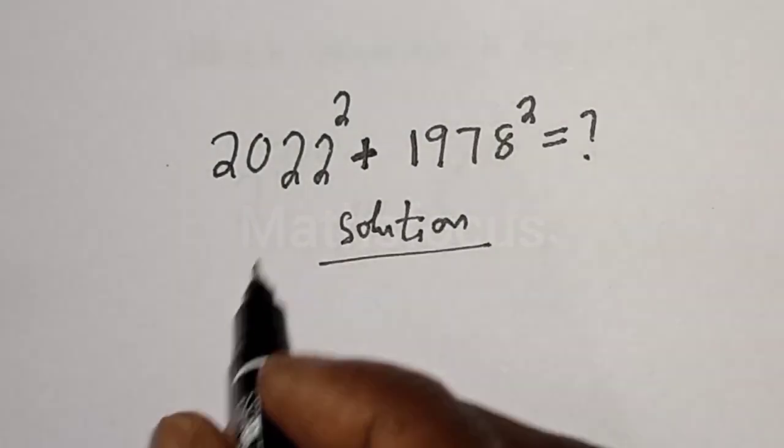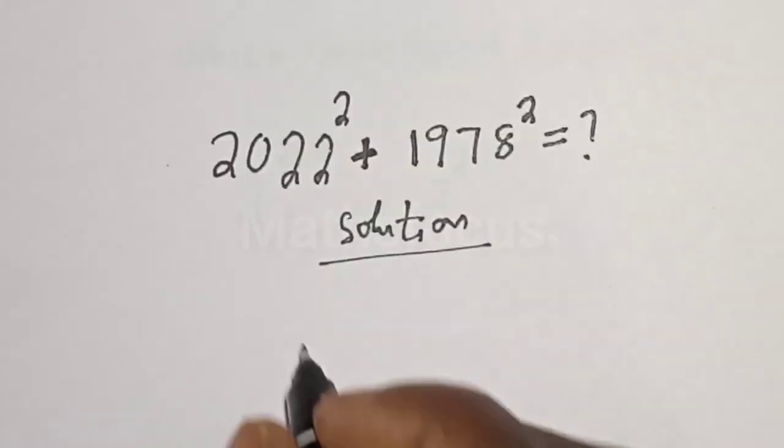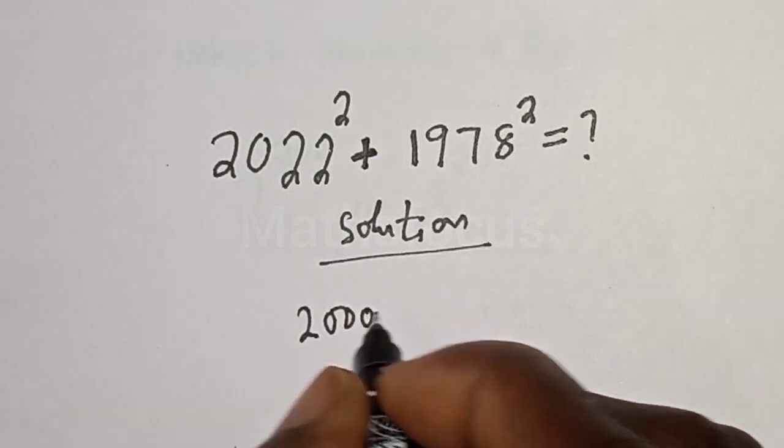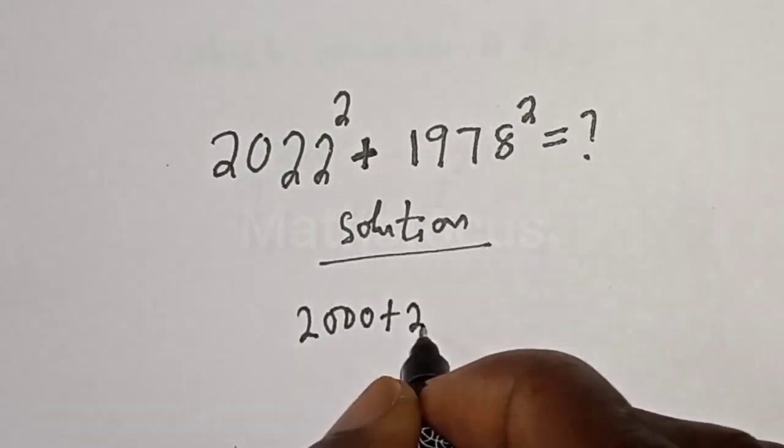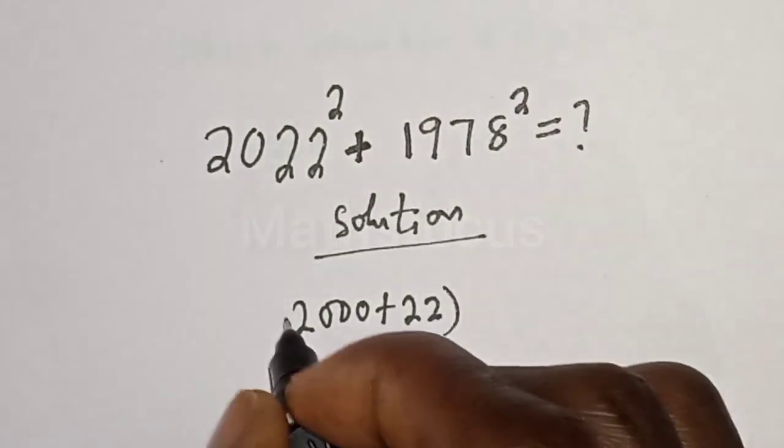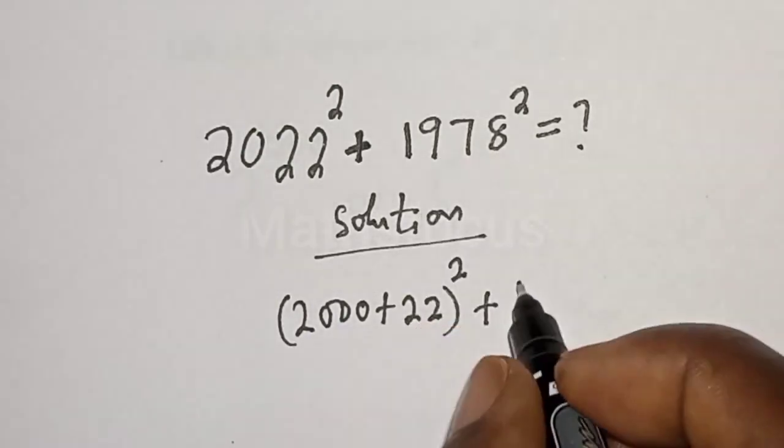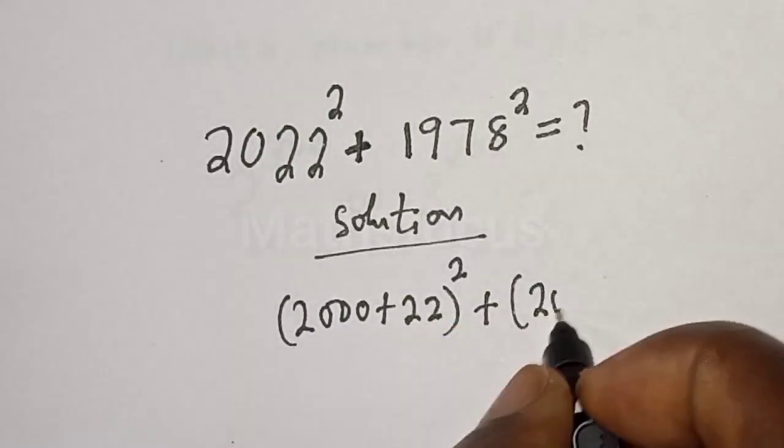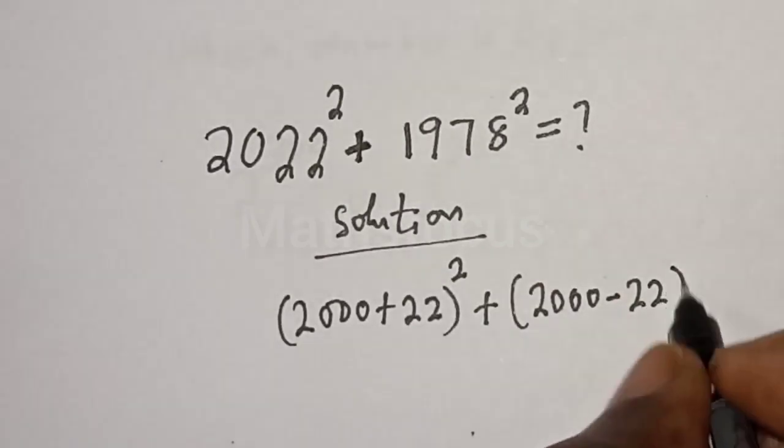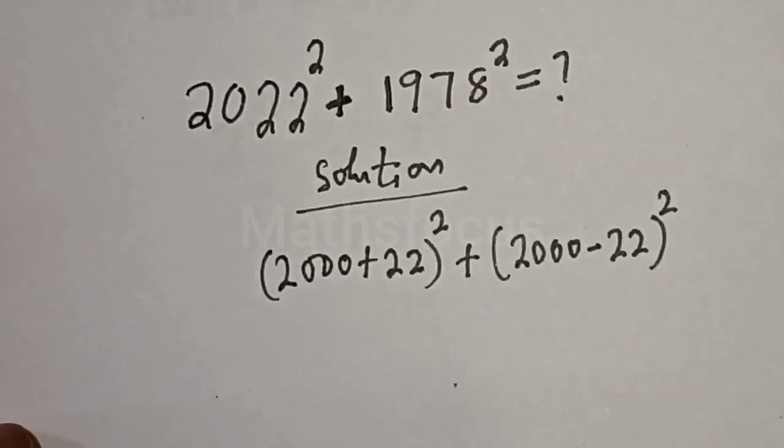Let's see, 2022 can be written as 2000 plus 22, then squared. Plus 1978 can be written as 2000 minus 22, then squared.